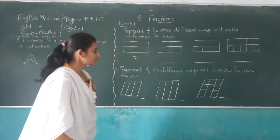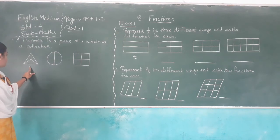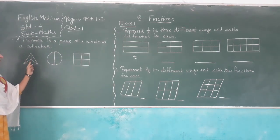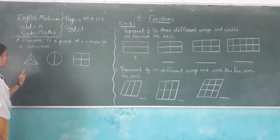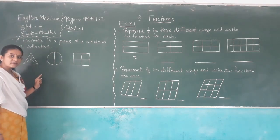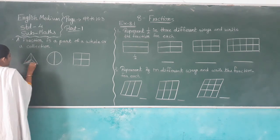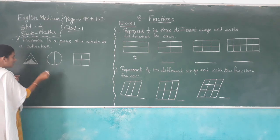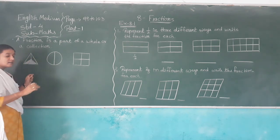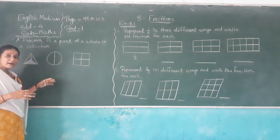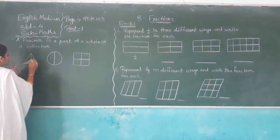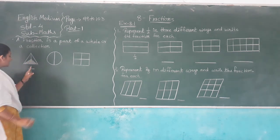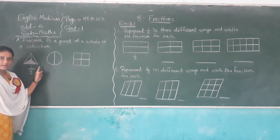Look here — this is a triangle. How many parts? Three parts. And one part is shaded. The triangle has one, two, and three parts. It is divided into three parts. That means this is a fraction. One part is shaded out of three parts of the triangle. That means one third.